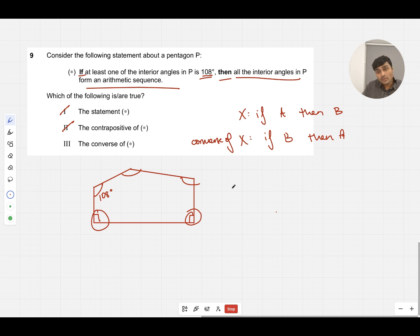If we list out our angles in P, let's call them a, a+d, a+2d, a+3d, and a+4d, because we're investigating the converse of star. We can assume that all the interior angles in P form an arithmetic sequence of this form.